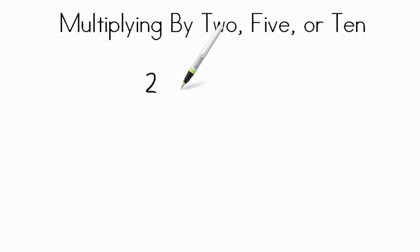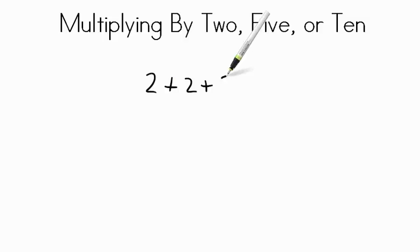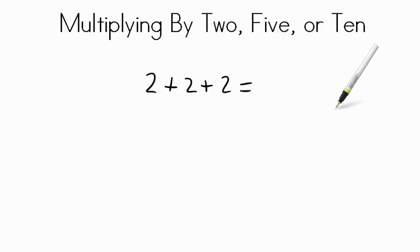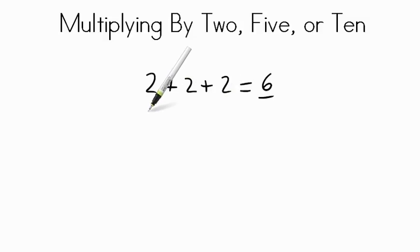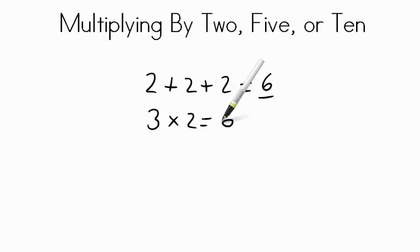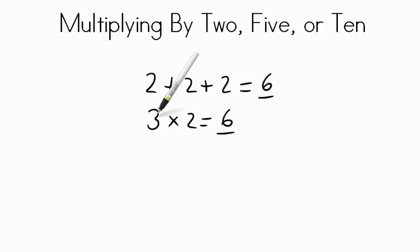So if I give you the number 2 plus 2 plus 2, can you tell me what that adds up to be? Very quickly, I'm sure you can tell me the sum is 6. Now, if we were doing that by multiplication, what we'd actually be saying is 3 times 2 equals 6. Our product or answer would be 6 because we have 3 groups of 2: 2 plus 2 plus 2.